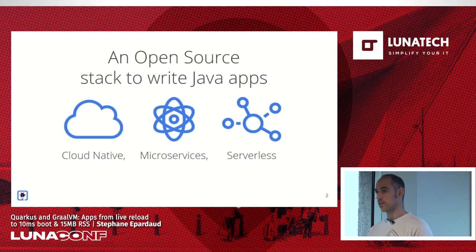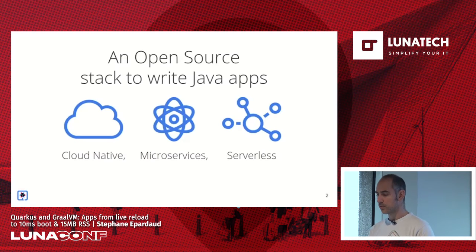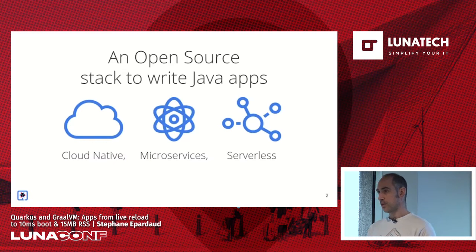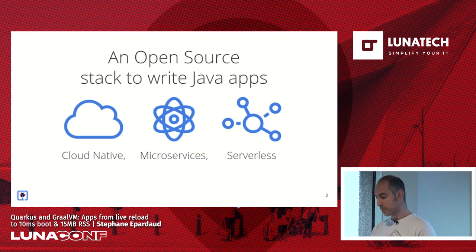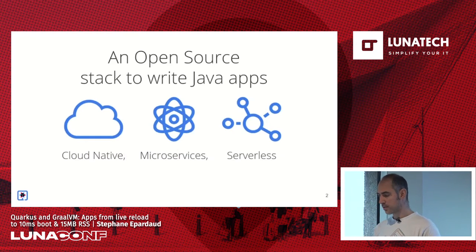Quarkus is an open source project. It's a stack that you use to write Java applications. Even though you can create monoliths with it, we focus on really different sorts of applications. We focus on solving three cases of applications: we want to support monoliths, but we also want to support from the start what we call cloud-native applications — where we focus and optimize on.